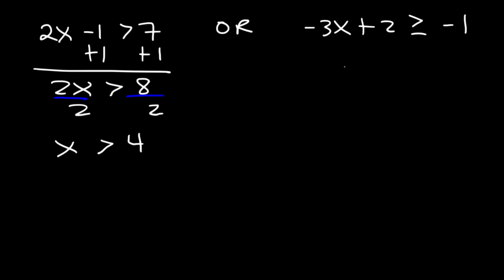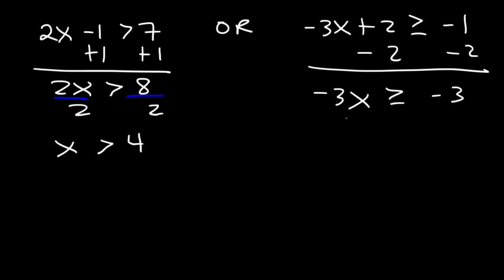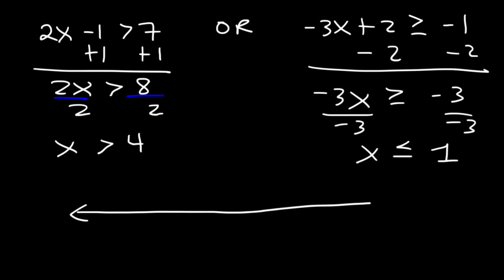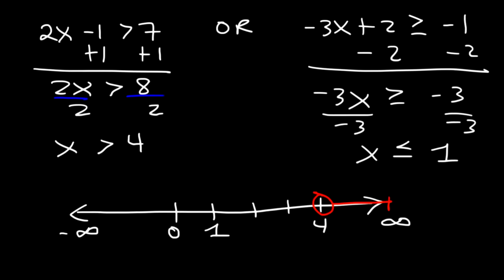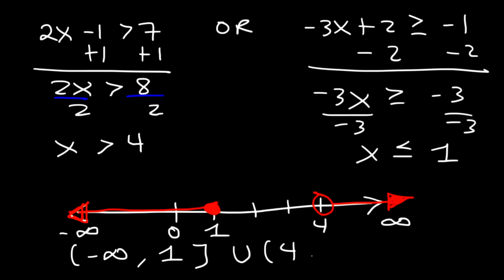Before we plot it on the number line, let's solve the other one. Subtract both sides by 2: negative 1 minus 2 is negative 3. Next, divide by negative 3 — don't forget to change the direction of the inequality sign. So x is less than or equal to 1. On the number line: x greater than 4 gets an open circle shaded right; x less than or equal to 1 gets a closed circle shaded left. Using interval notation, the answer is negative infinity to 1 using brackets, union 4 to infinity.